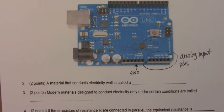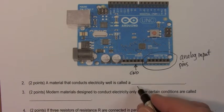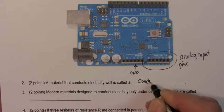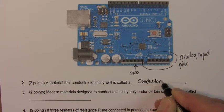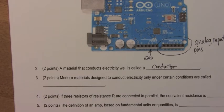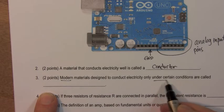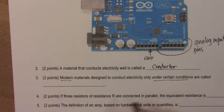Question number two. A material that conducts electricity well is called a semiconductor. Number three. Modern materials designed to conduct electricity only under certain conditions are called what? Modern materials, certain conditions, we're talking about semiconductors.